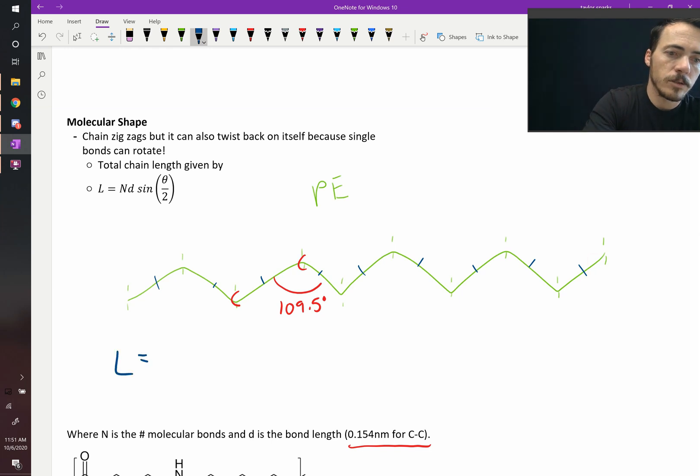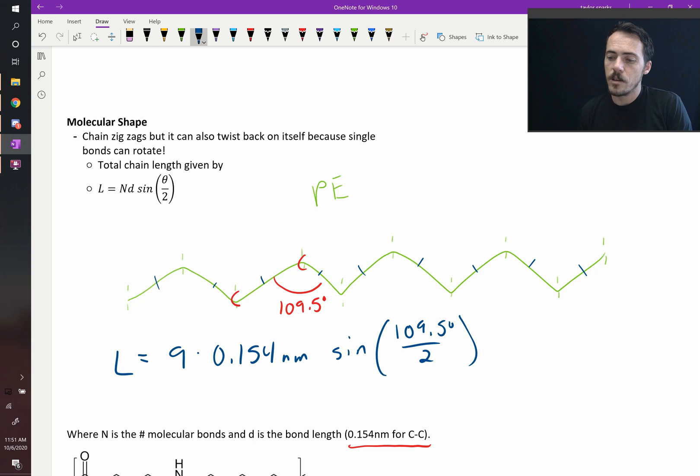So the length would be equal to 9 times the distance of each bond, 0.154 nanometers, times sine of 109.5 degrees divided by 2. So let's punch that into our calculator. I get that it's 1.13 nanometers.